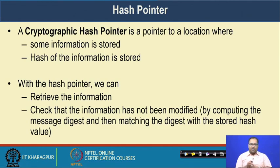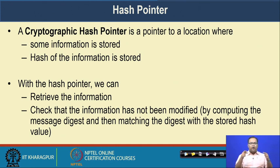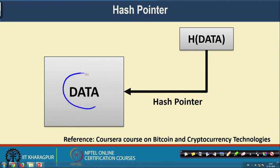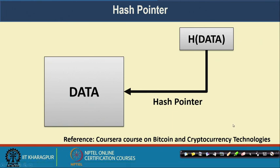Now we come to the concept of hash pointers used in blockchain. A cryptographic hash pointer is a pointer to a location where we store the original message or information along with the hash of that information. With this hash pointer you can retrieve the information and make a sanity check — if the hash value matches the message digest, then this hash pointer correctly points to the original message.